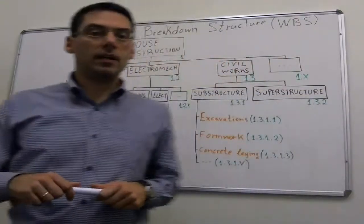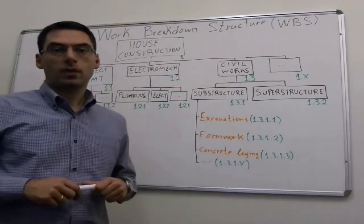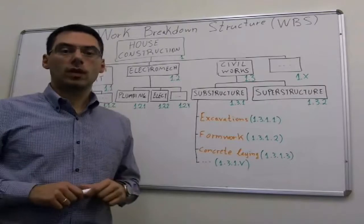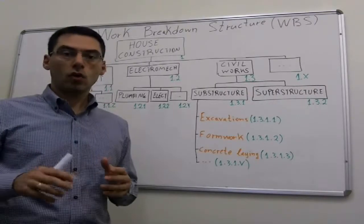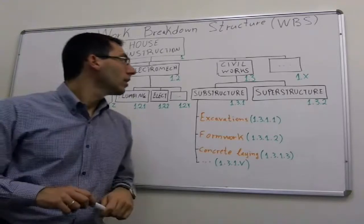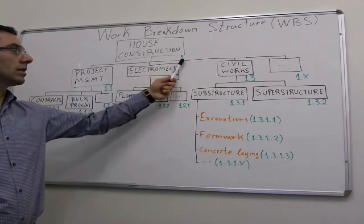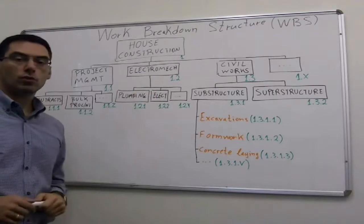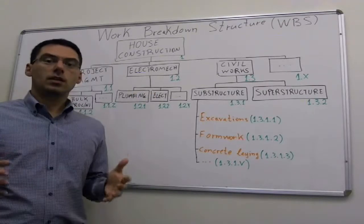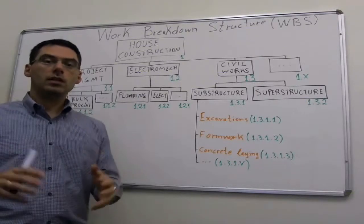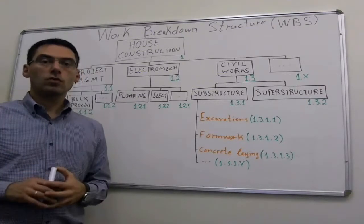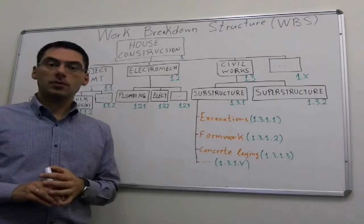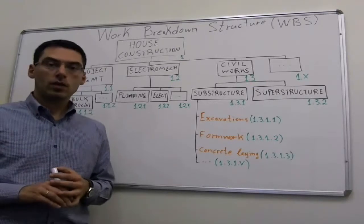How can we verify that our work breakdown structure is a good one? First of all, we need to secure that the final work breakdown structure has identifiers, codes to each element on the structure. For instance, house construction has the code 1, project management 1.1, electromechanical 1.2, and so on. The bigger our project is, the most important is to identify the codes, because these codes are going to be linked afterwards to all the other subject groups of project management, like scheduling, costing, etc.